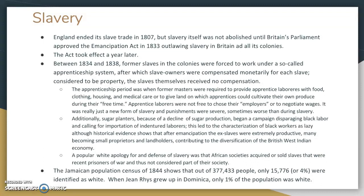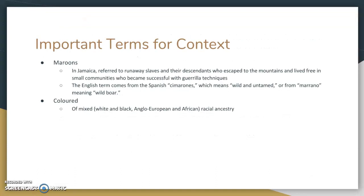There are some very important terms you should probably know when you go into this novel. One of the first is maroon. In Jamaica, this referred to runaway slaves and their descendants who escaped to the mountains and lived free in very small communities, and they were very successful with guerrilla techniques. The term actually comes from Spanish cimarrones, meaning wild and untamed, or from marano, meaning wild boar.